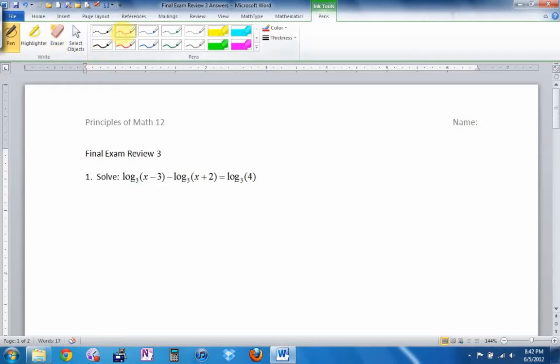Now our strategy for a logarithmic equation was to try to write it as one thing equals one thing. Here I have logs of the same base. I'm subtracting. I can combine them as a log. Subtracting two logs is the same as dividing. This is the same as log base 3 of (x - 3)/(x + 2), that equals log base 3 of 4. I now have one log equals one log, and so the logs cancel.